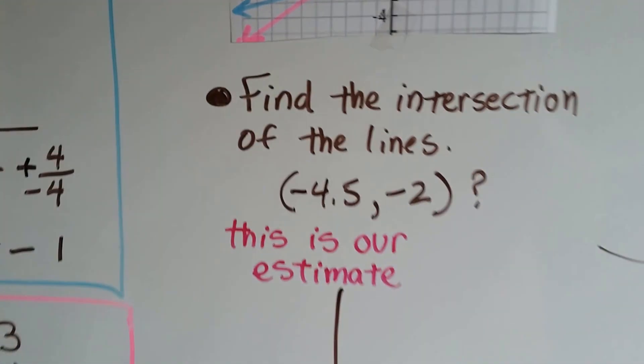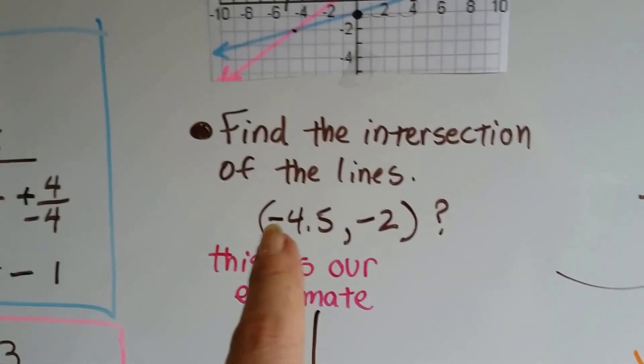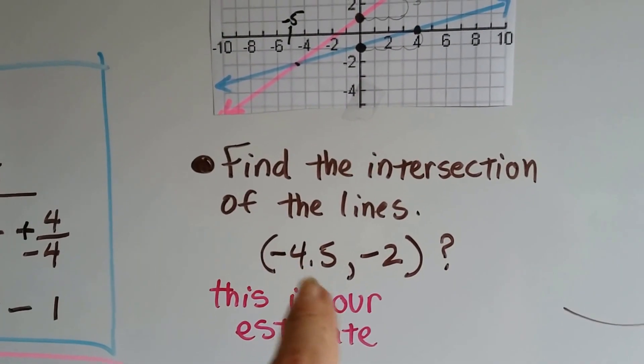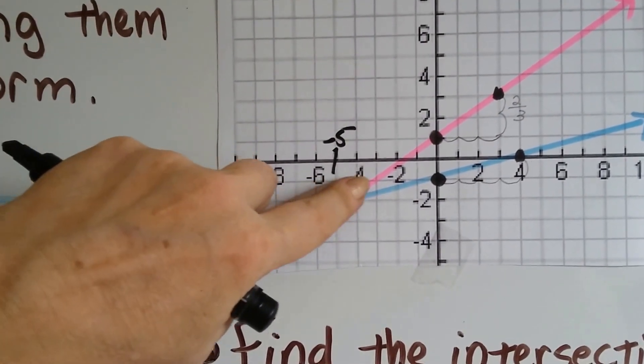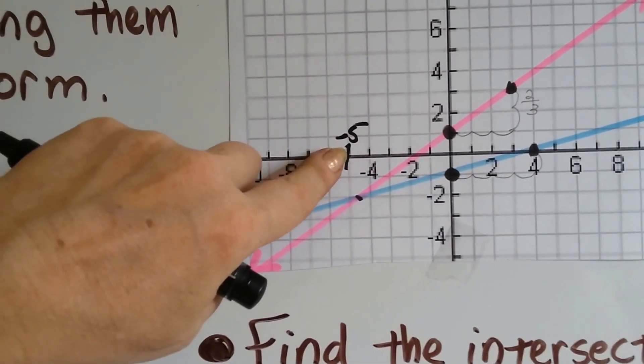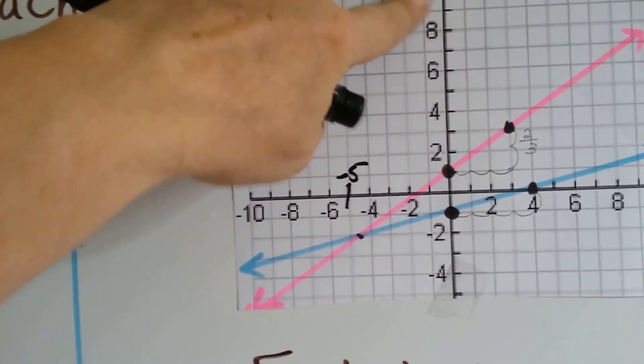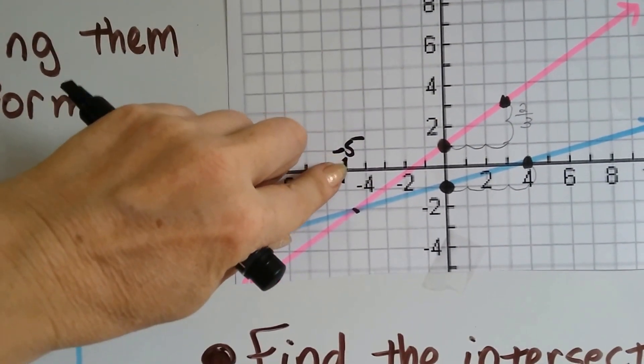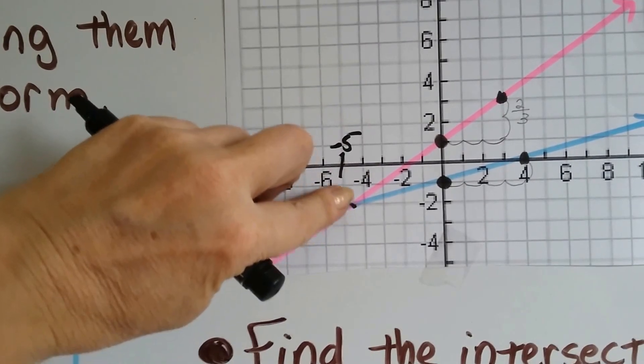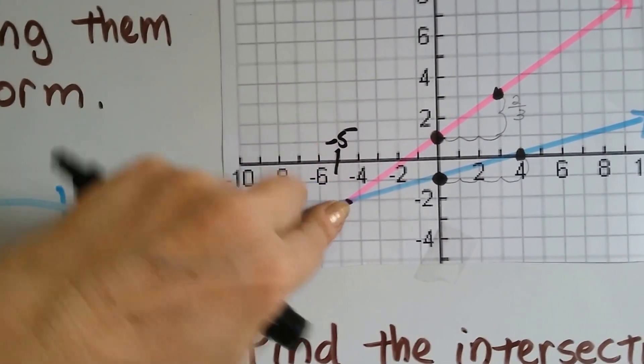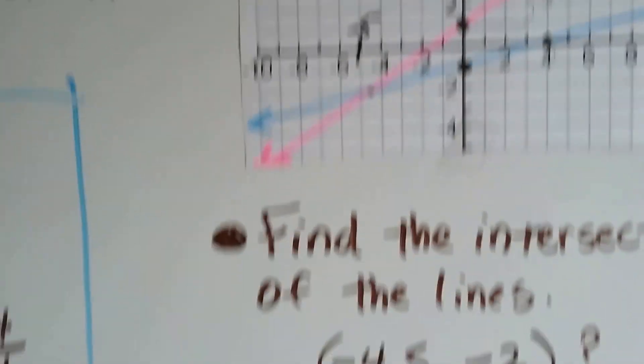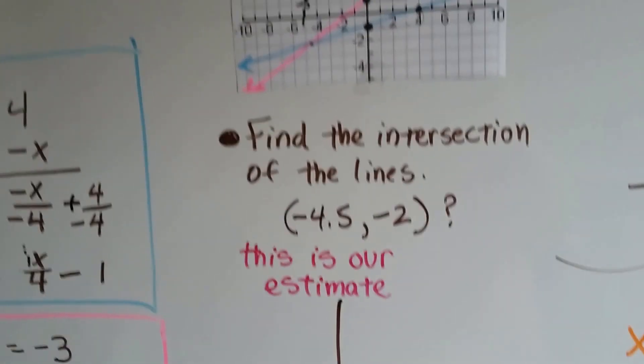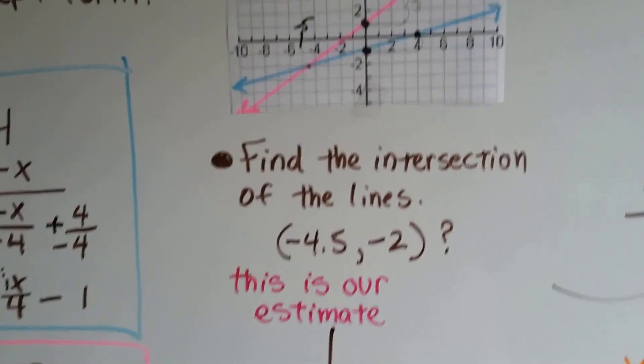Now what we do is we find the intersection of those lines, and it looks like it hits it at negative 4.5 and negative 2. Check it out. If this is negative 6 and that's negative 4, then that's negative 5. Because it skips by even numbers. So here's our negative 5, and look, it hits it at about a 4.5. This one hits it about negative 2. So that's going to be our estimate. Negative 4.5, negative 2. I got a question mark there because I'm not sure.